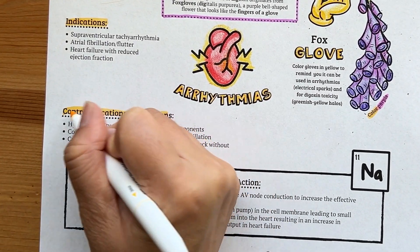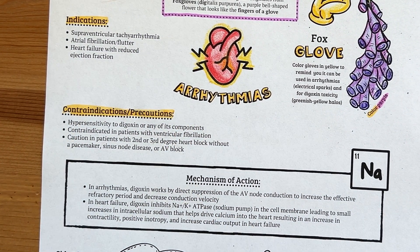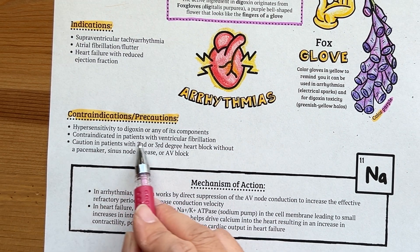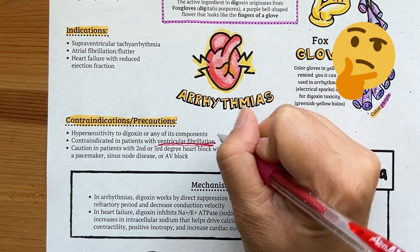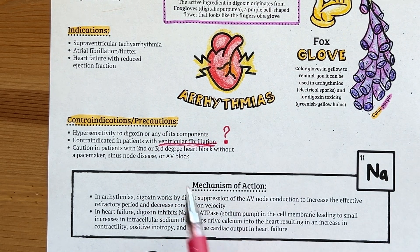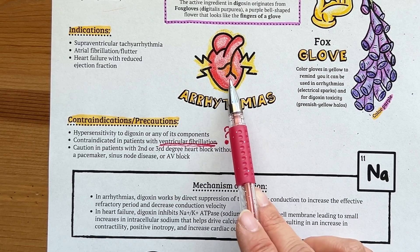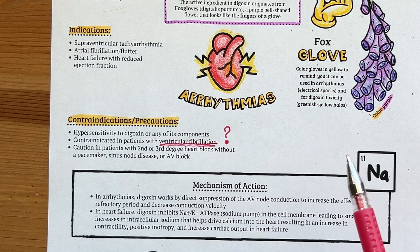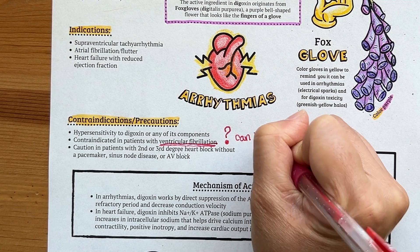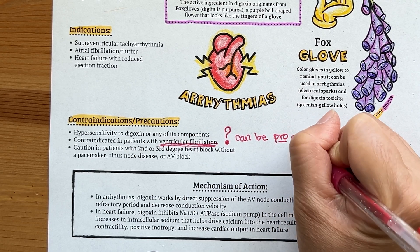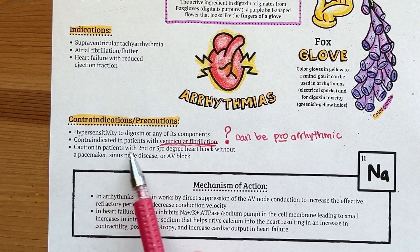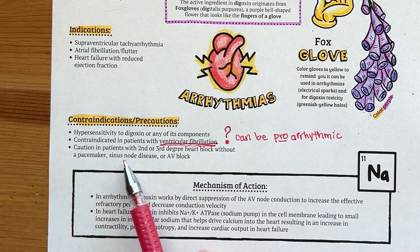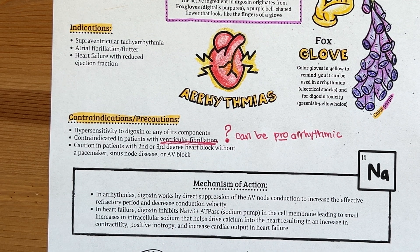Some contraindications and precautions to keep in mind that will likely show up on exams: digoxin is contraindicated in patients with ventricular fibrillation. Similar to other antiarrhythmic agents, digoxin is proarrhythmic at toxic levels, and patients with impaired ventricles at baseline are more prone to ventricular tachyarrhythmias. Additionally, it should be used with caution in patients with second or third degree heart block without a pacemaker, sinus node disease, or AV block, as digoxin's toxicity can worsen these conditions.